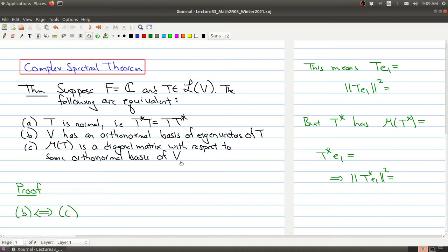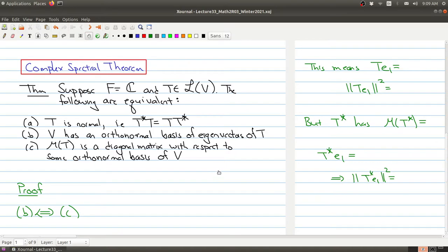So what the complex spectral theorem is saying is that if the eigenvectors of T form an orthonormal basis for the vector space V, then that T would have to be a normal operator. And at the same time, if it's a normal operator, you get a diagonal matrix if you use that basis. So let's walk through the proof.